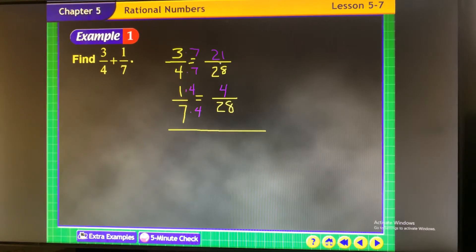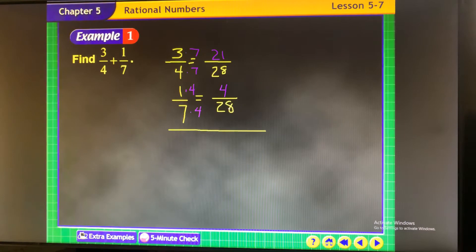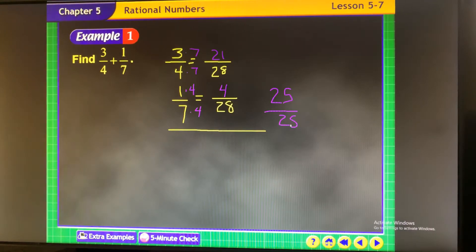3 fourths is equal to 21 over 28. 1 seventh is equal to 4 over 28. Now all I have to do is add the numerators and keep the denominator the same. Done.